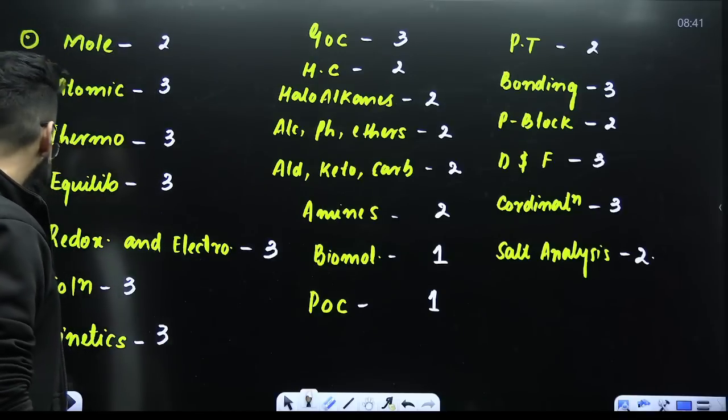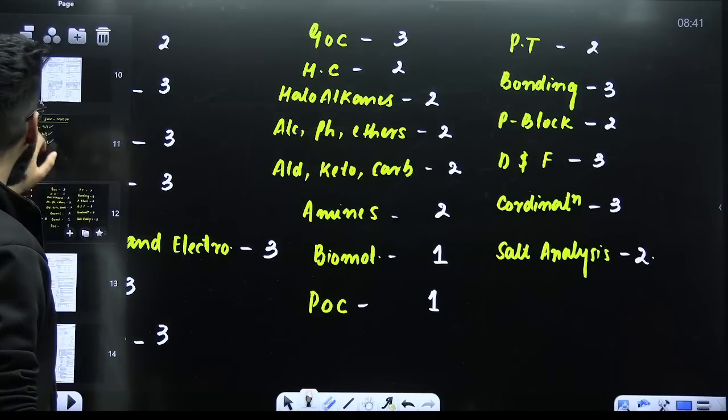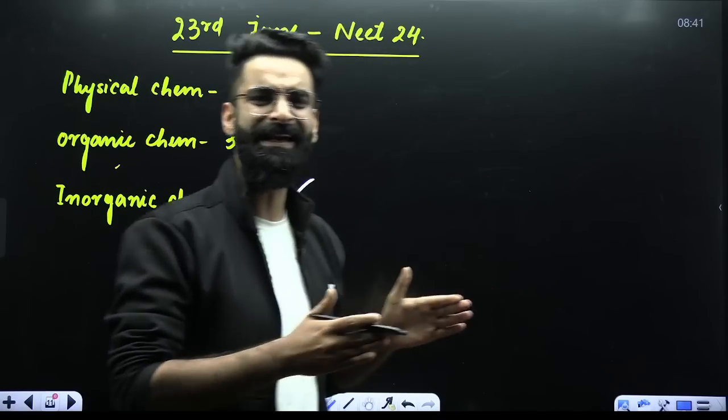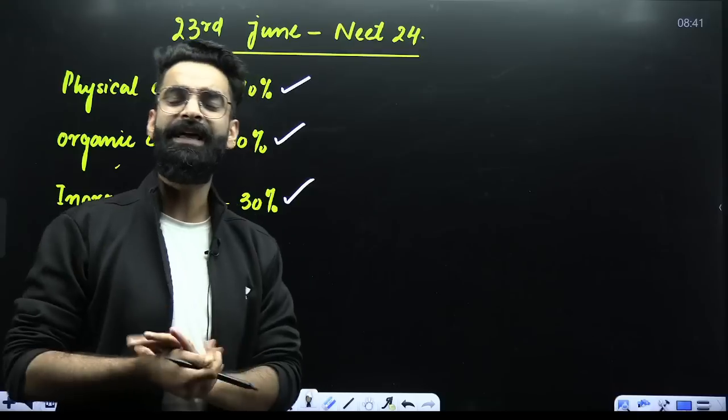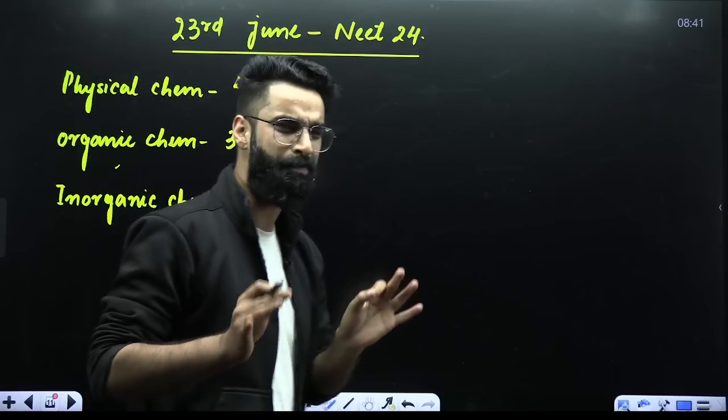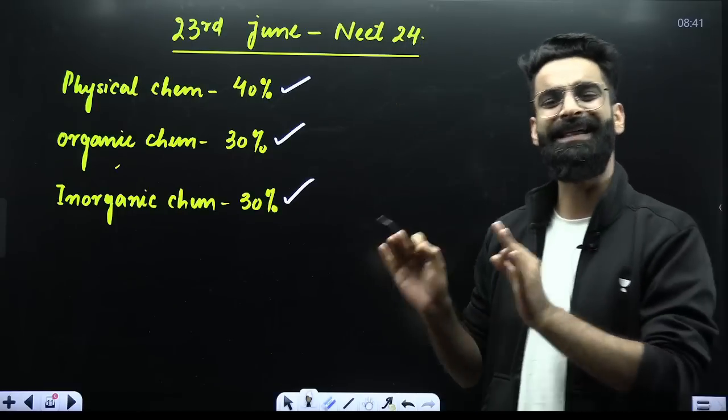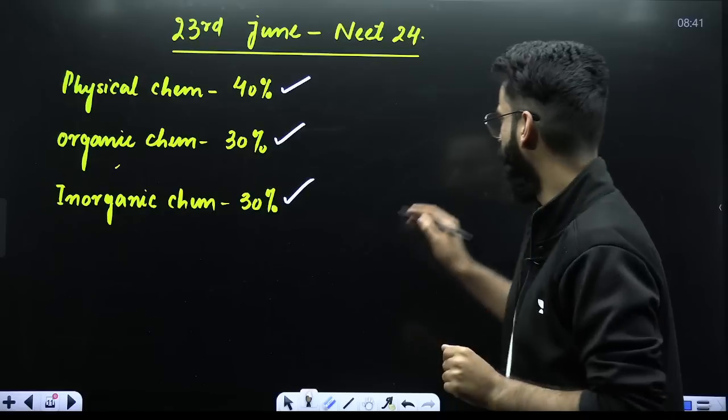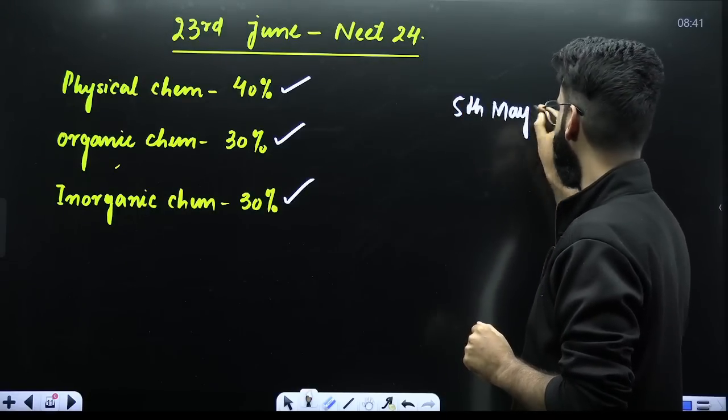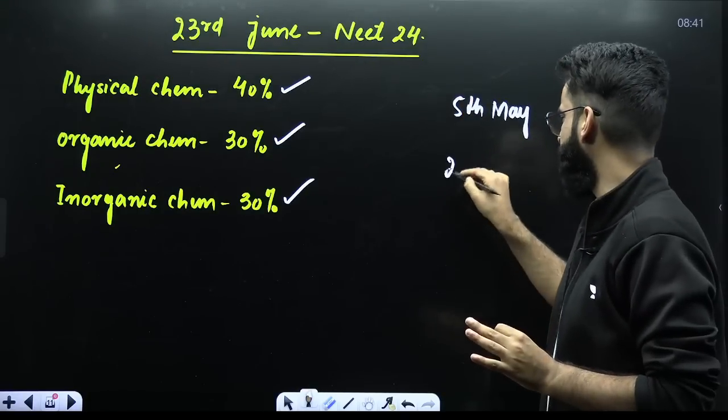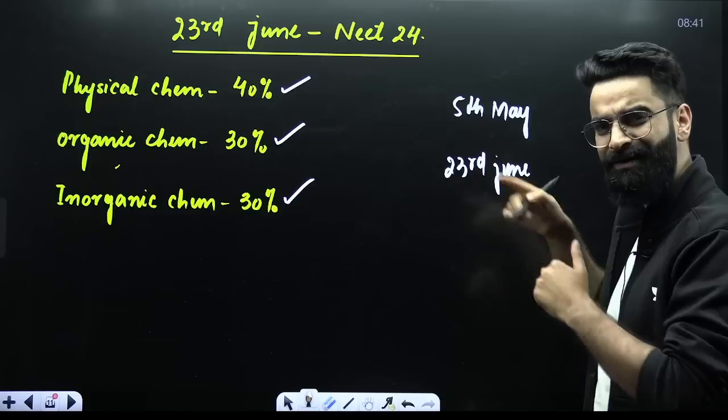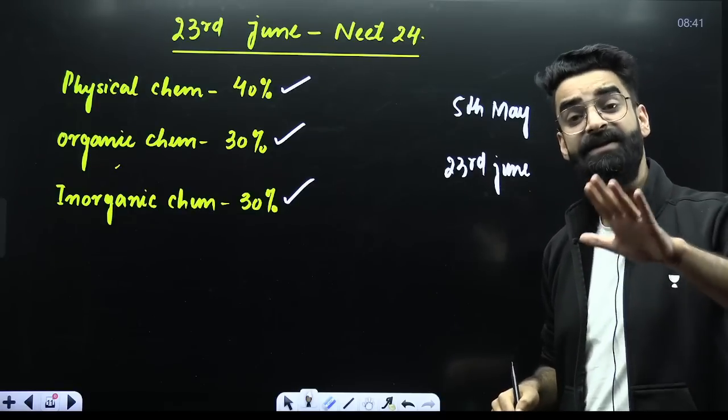Now guys, if you exactly see the level of the paper, I would say if you ask me whether this re-NEET examination was difficult than the NEET examination which happened on 5th of May, I would say the paper was bit lengthy. What, whatever paper you saw exactly on 5th of May, the paper which you saw on 5th of May and the paper which you saw exactly on 23rd of June. What is the difference in the level? The level is almost same.